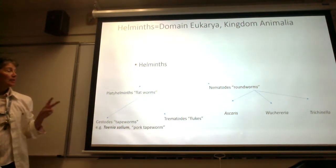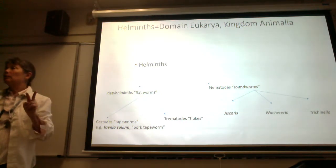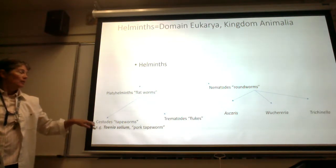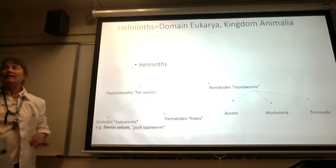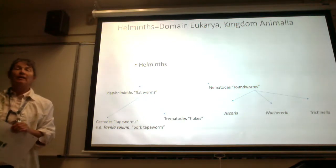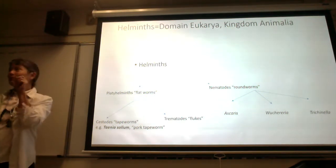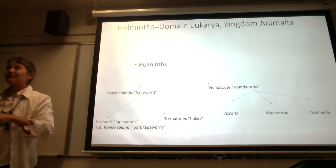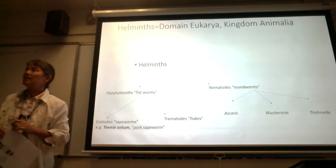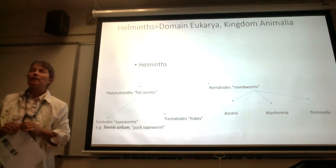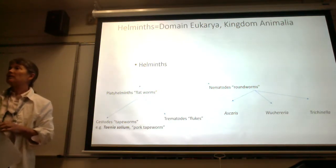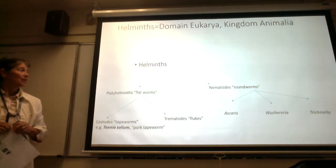Within platyhelminths, there are two big groups and we're only going to focus on one. The group we're going to focus on are called the cestodes or tapeworms, because they grow in little segments, little proglottids. We already know the one cestode that we would ask you on lab exam two, and that's Taenia solium. What's the common name for Taenia solium? The pork tapeworm. And we'll come back and talk about the life cycle and transmission.